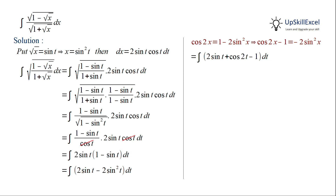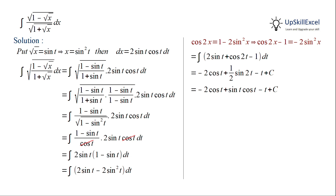Now we will do term-wise integration. For the first term, 2 is a constant and the integration of sin t is −cos t. For the second term, the integration of cos 2t is (1/2) sin 2t. The third term being a constant gives integration as t. The second term sin 2t expands to 2 sin t cos t, and 2 cancels with 1/2, giving us sin t cos t.